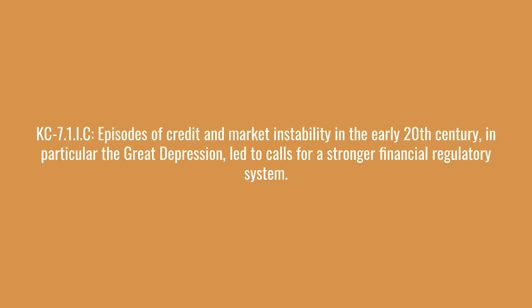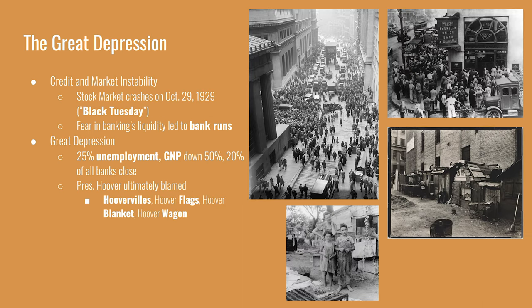Episodes of credit and market instability in the early 20th century — in particular the Great Depression — led to calls for a stronger financial regulatory system. The stock market crash happened on October 29, 1929, often referred to as Black Tuesday. After the crash, banks that had money tied up in the stock market no longer had enough in their vaults to cover customers' savings. As consumers feared banks would run out of money, they rushed to withdraw their funds — these are called bank runs, and the fear of a bank not being liquid was typically a self-fulfilling prophecy.